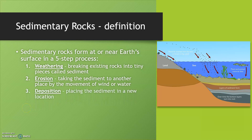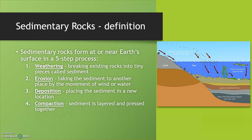Third is deposition. This is when the tiny pieces of sediment are placed in a new location. Next is compaction. This is when the sediment is layered and pressed together. As more and more sediment is layered on top of other sediment, it makes layers and then the bottom layers get pressed together by the weight of the overlying layers.